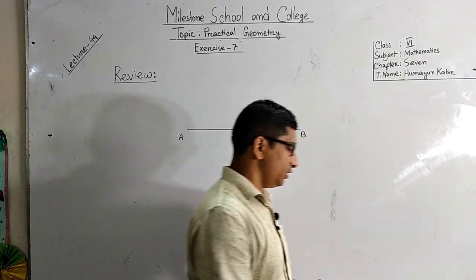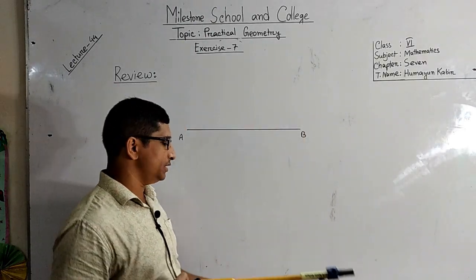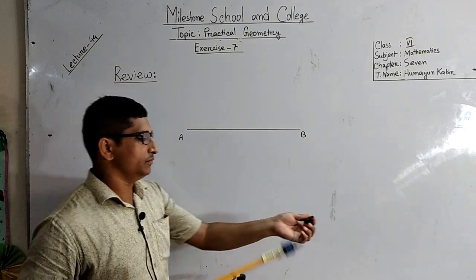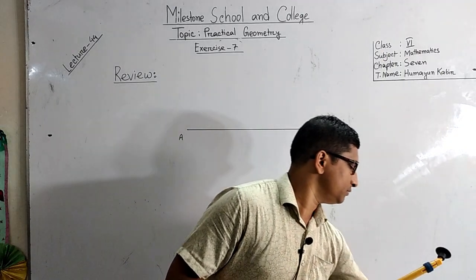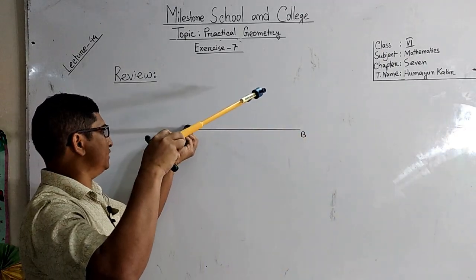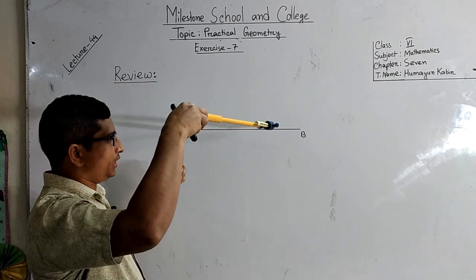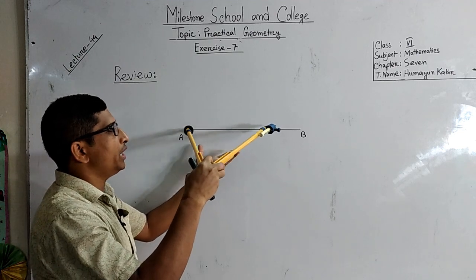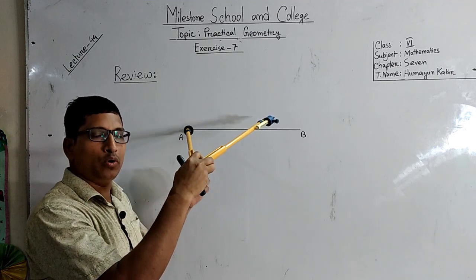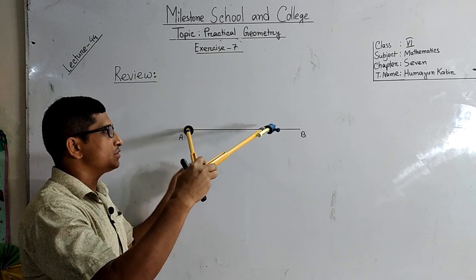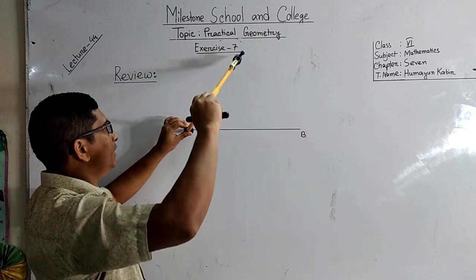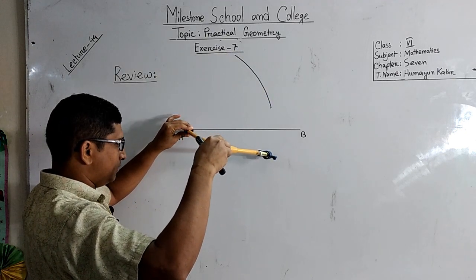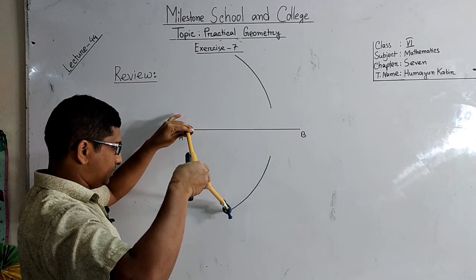Here I will show how we will divide this line segment into two equal parts. This is the pencil compass and you will set the pointer here. With A as a center, taking the radius more than half of AB, you will draw one arc and another arc, like this way.